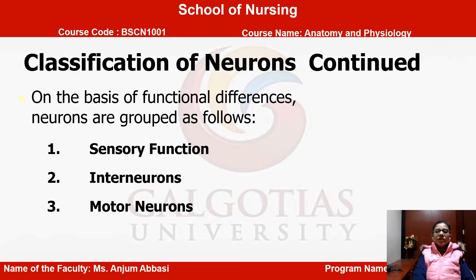Next is the classification of neurons. This classification is on the basis of their functional differences. Do not be confused — we previously learned on the basis of structure, such as unipolar, bipolar, and multipolar. Here we are learning on the basis of their functional differences.